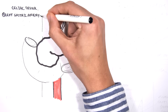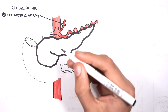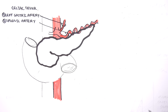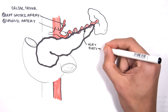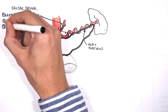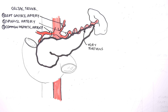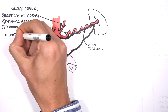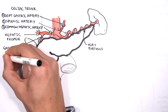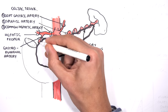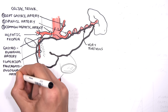The three branches of the celiac trunk are: the left gastric artery, which supplies the stomach; the splenic artery, a tortuous vessel with branches supplying the superior part of the pancreas and the greater curvature of the stomach, ending at the spleen; and the common hepatic artery, which branches into the proper hepatic artery supplying the liver and gallbladder, and the gastroduodenal artery.